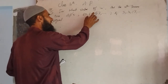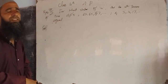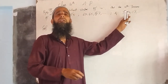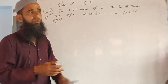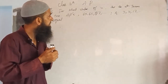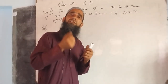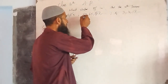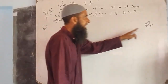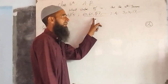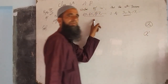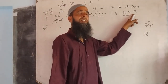Solution mein kya karenge hum? Pehle hum is first wali arithmetic progression ka nth term dekhenge. Phir hum isi tarah second arithmetic progression ka nth term lenge. Un ko hum maan le ki woh equal hai. If we take that particular relation, we get the solution of the question. That is nth term of first arithmetic progression. Isi tarah second, iska hum nth term lenge — that is nth term of the second arithmetic progression.